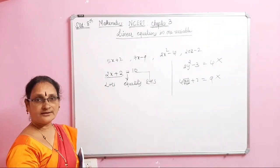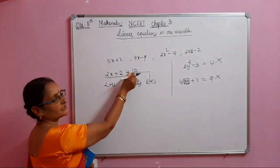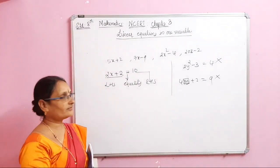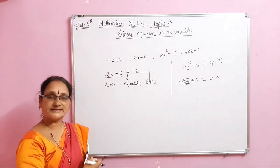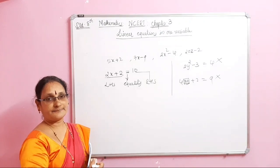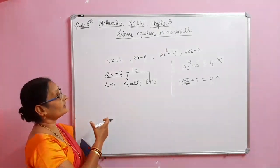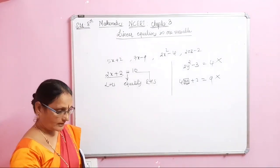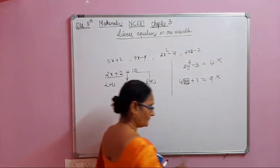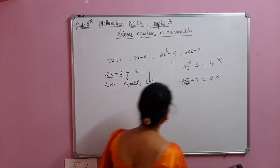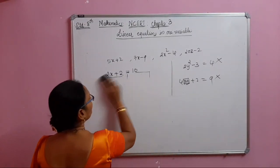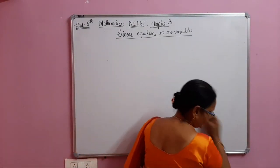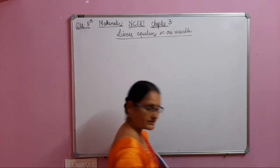And for an equation, there must be equality. Now you understand what a linear equation is. Consider 2x minus 4 equal to 6 — this is one linear equation with only one variable of power 1.